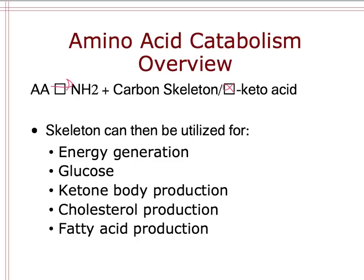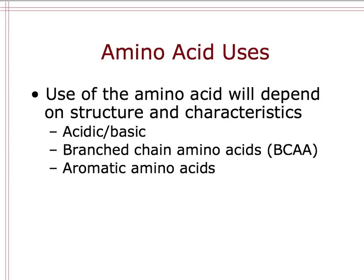As an overview of the catabolism portion of amino acids: the amino acids are broken down into the amine group and the carbon skeleton or alpha-ketoacid. That skeleton can then be used for energy, to make glucose, ketone bodies, cholesterol, or fatty acids. Essentially, the body takes what we eat, breaks it down, and turns it into what we actually need.